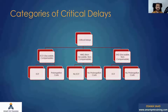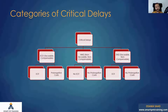We have to understand first the classification of critical delays — the cases where the contractor is entitled for EOT, prolongation cost, or both. We have three categories of critical delays. The first category is ECD.